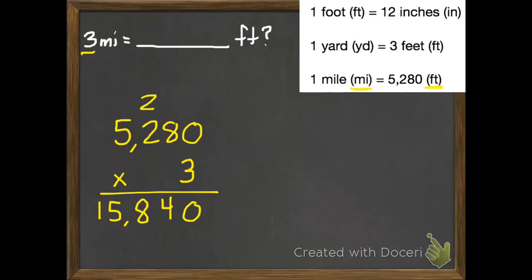We get 15,840. But 15,840 what? Feet. So we write that up top in our answer. 3 miles equals 15,840 feet.